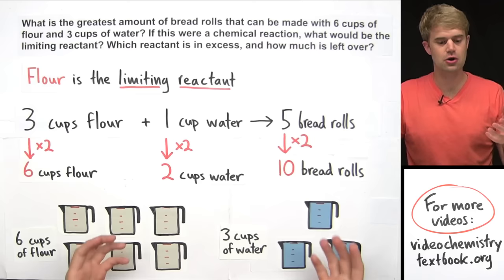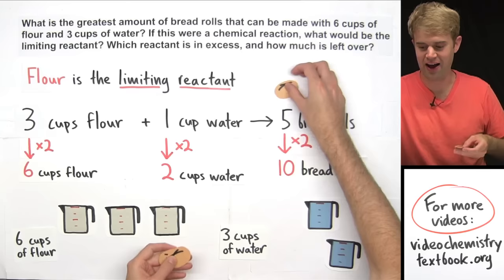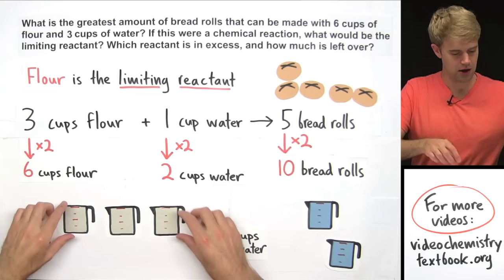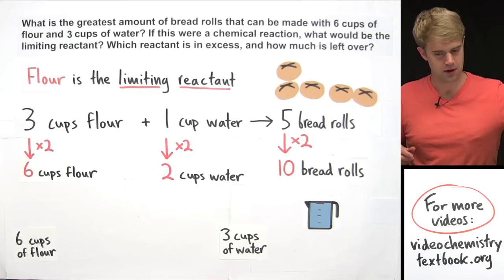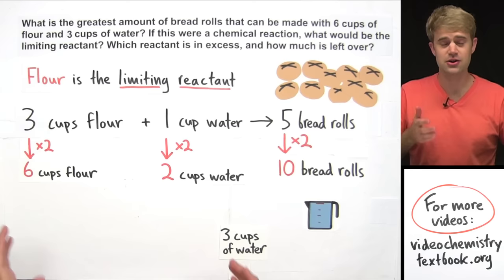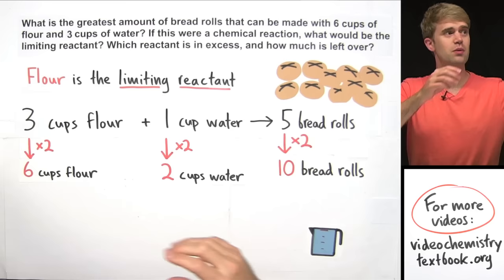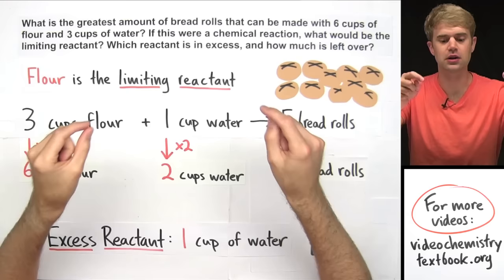We can also show this visually. Imagine we're cooking the recipe: three cups of flour and one cup of water are combined to get five bread rolls. We do that again — another three cups of flour and one cup of water gives five more bread rolls. Now the flour has run out. Flour is the first thing to run out, so it's the limiting reactant. We still have one cup of water left, and that's our excess reactant — one cup of water left over after we run out of the limiting reactant.